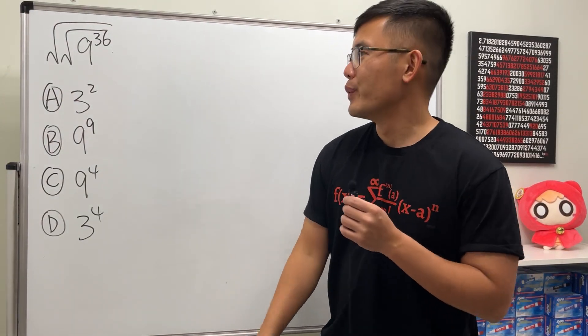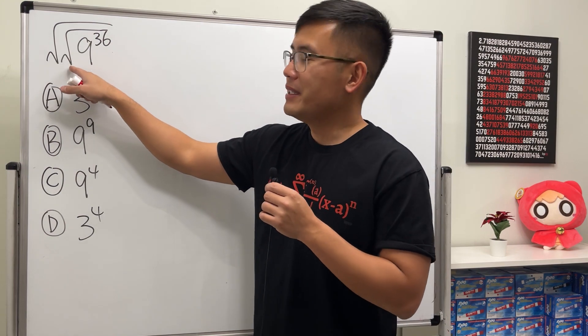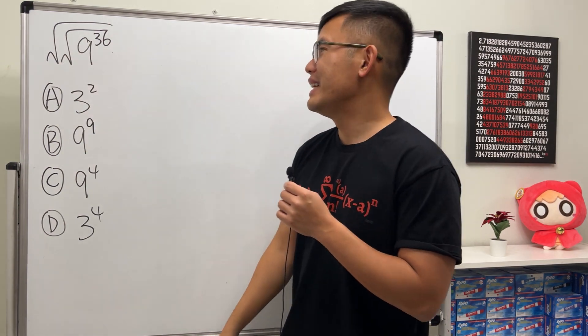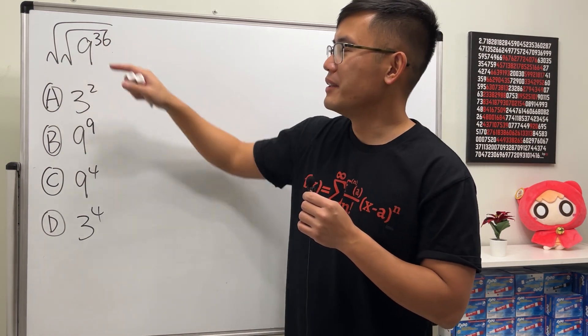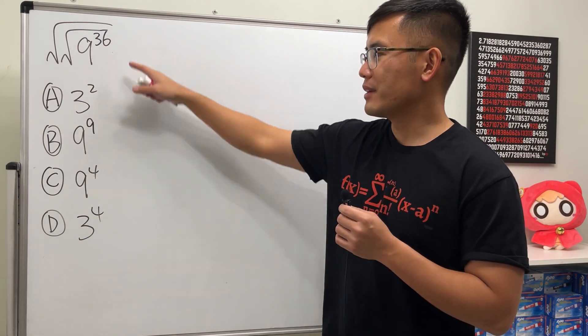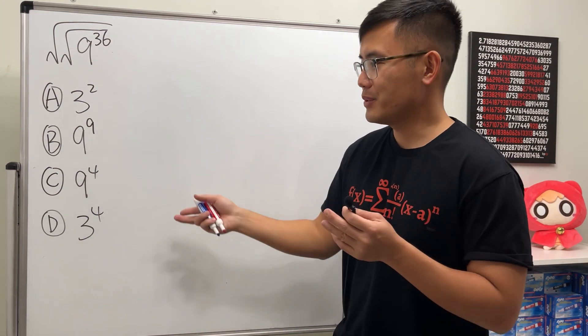Okay, this is a fun square root question. We have a nested square root, meaning a square root inside another one, and then inside here we have 9 to the 36th power. Our goal is to find out what this equals. Please pause the video and try this first.